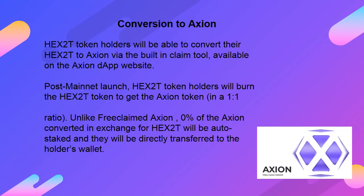Conversion to Axion: HEX 2T token holders will be able to convert their HEX 2T to Axion via the built-in claim tool available on the Axion DApp website. Post mainnet launch, HEX 2T token holders will burn the HEX 2T token to get the Axion token in a 1-to-1 ratio. Unlike free claimed Axion, 0% of the Axion converted in exchange for HEX 2T will be auto-staked — they will be directly transferred to the holder's wallet.